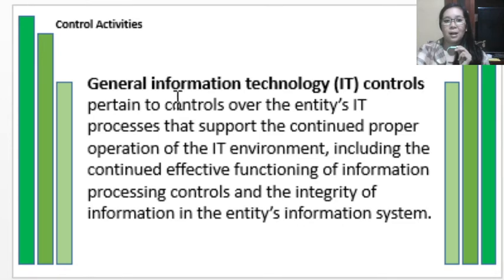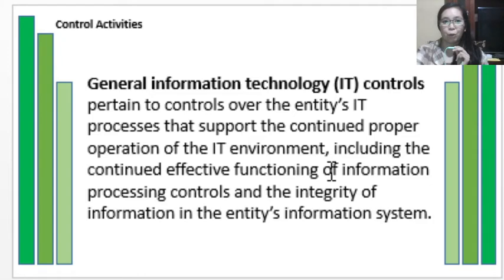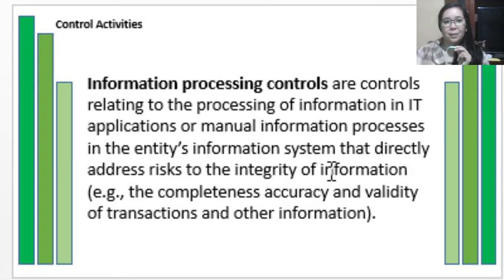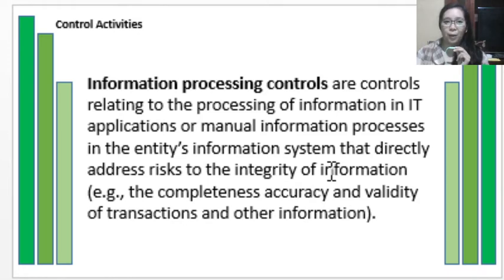General IT controls focus on how data are being processed as well as the safety of the entity's information. Information processing controls, on the other hand, are controls relating to the processing of information in IT applications or manual information processing in the entity's information system. These directly address the risk to the integrity of information.